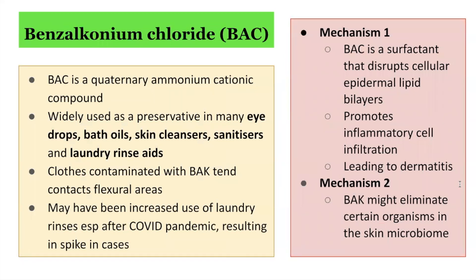Regarding agents which potentially trigger granular parakeratosis: it's important to note that the causative relationship between benzalkonium chloride and granular parakeratosis has not been definitively proven; however, there is an increasing number of case reports and anecdotal evidence to support this association. Benzalkonium chloride is a quaternary ammonium cationic compound widely used as a preservative and antiseptic in various products, including eye drops, bath oils, skin cleansers, sanitizers, and laundry rinse aids. Clothes contaminated with benzalkonium chloride tend to contact the flexural areas, particularly the axillary and groin folds.